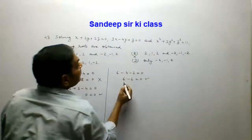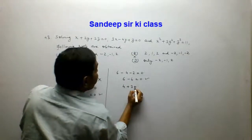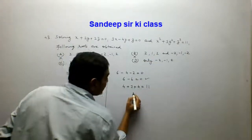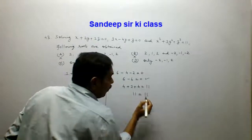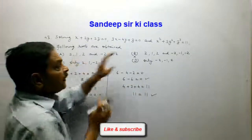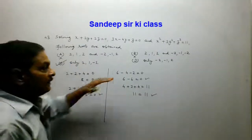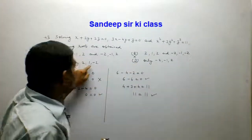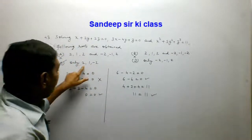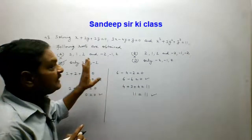Putting these values into the third equation gives 2² = 4, plus 3, plus (-2)² = 4, equal to 0. This simplifies to 0 equals 0, so option C satisfies all three equations and is the correct answer. The values are X = 2, Y = 1, and Z = -2.